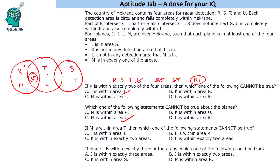L within area R is possible — we can have L and M placed to satisfy all conditions. Next question: if M is within area T, which of the following cannot be true? M is in exactly one area, so M sits in the T-only region. Can J be within area T? J has to be within S, but it can also be in the overlapping S-and-T region.